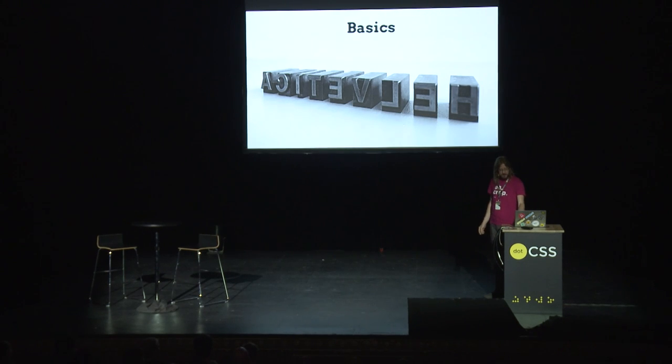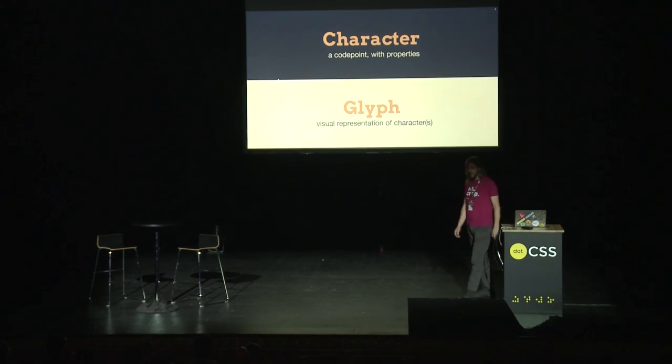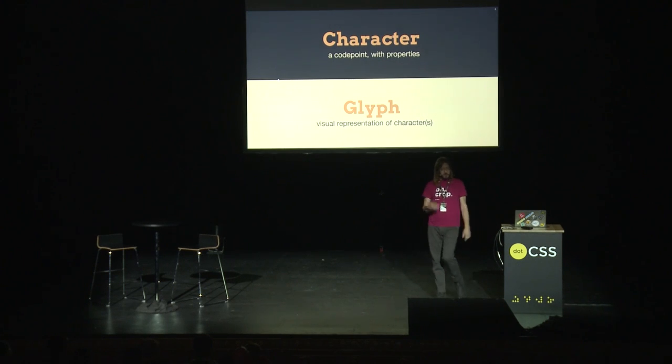So let's start with some basics. What is a character? A character is a number. It has some properties, like is this an uppercase letter, is this a numeral? But it's basically a number. Whereas the thing that you actually look at is called a glyph — that is the visual representation. People often mix these up, characters and glyphs.